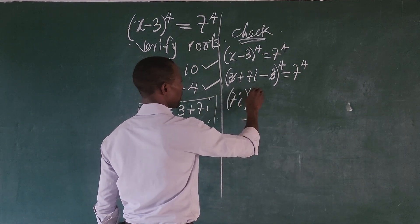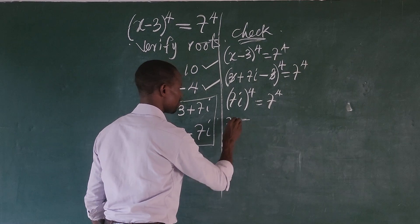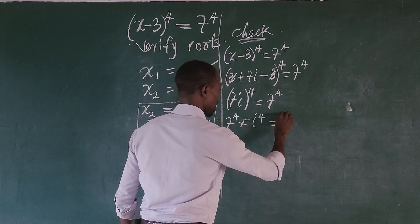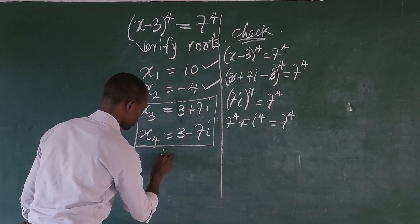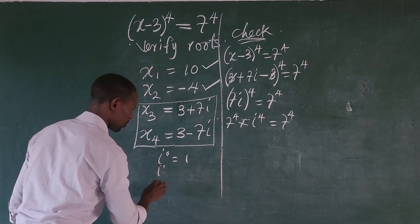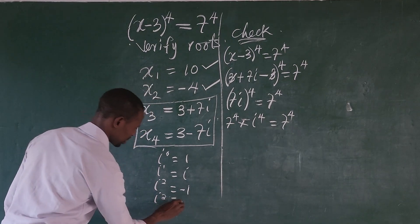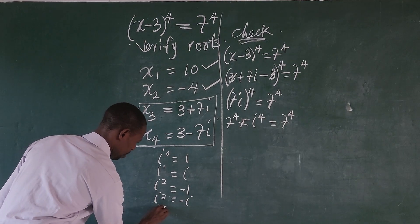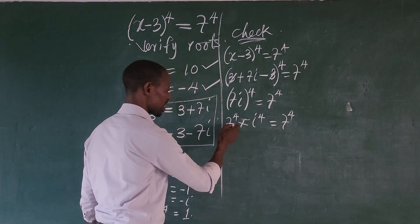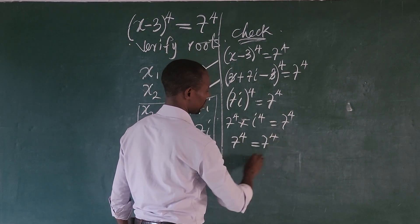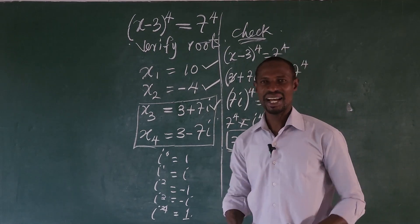We can rewrite (7i)^4 as 7^4 times i^4. So the question is: what is i^4? Let's look at the powers of i: i^0 = 1, i^1 = i, i^2 = -1, i^3 = -i, and i^4 = positive 1. So i^4 = 1. Therefore we have 7^4 times 1 = 7^4, which equals 7^4. This shows that the third root x = 3 + 7i satisfies the original equation.